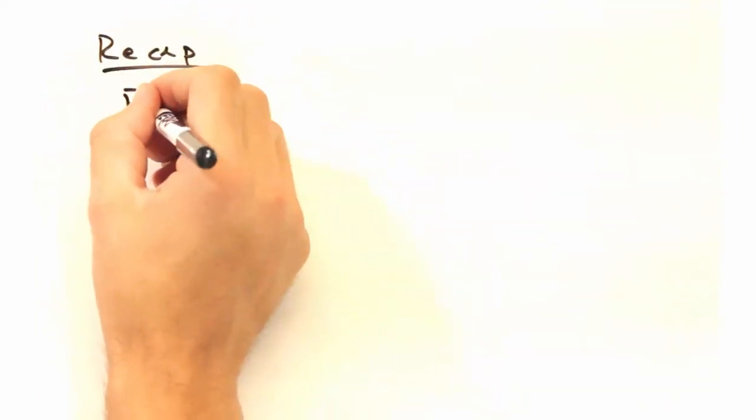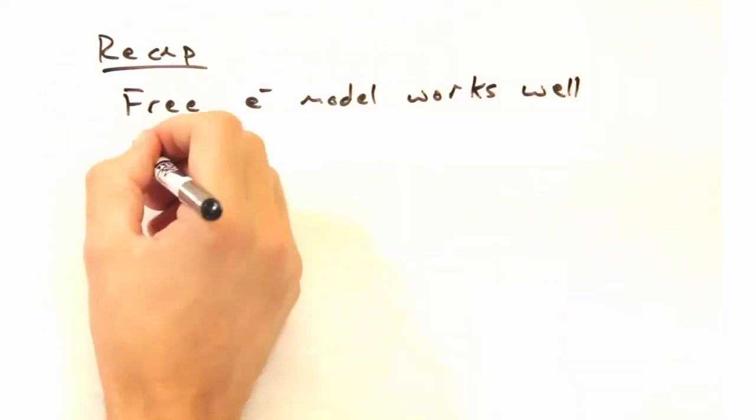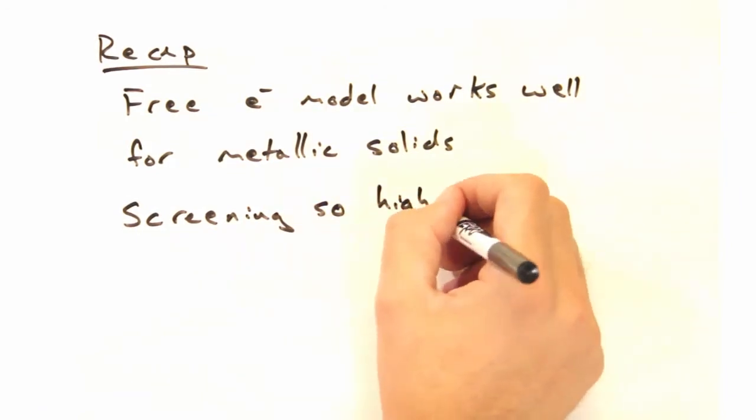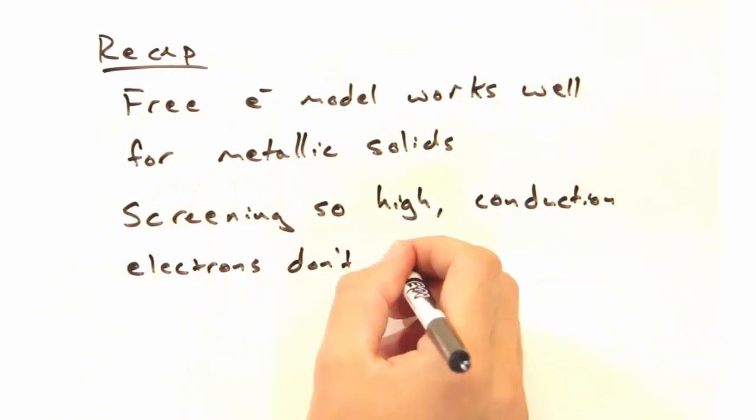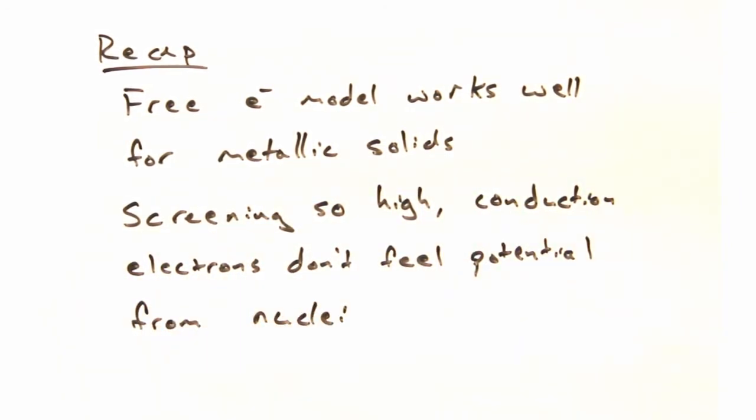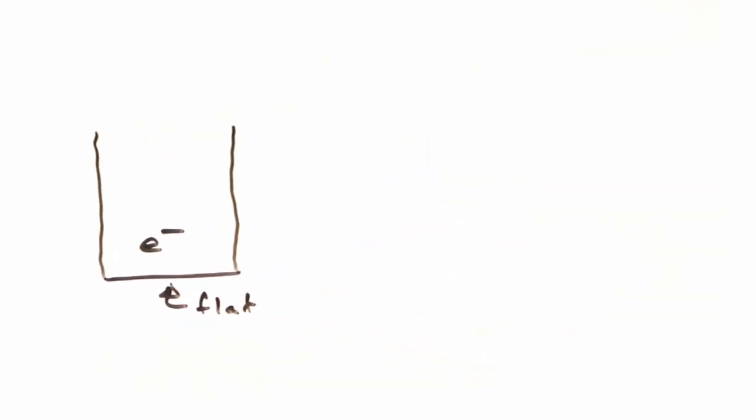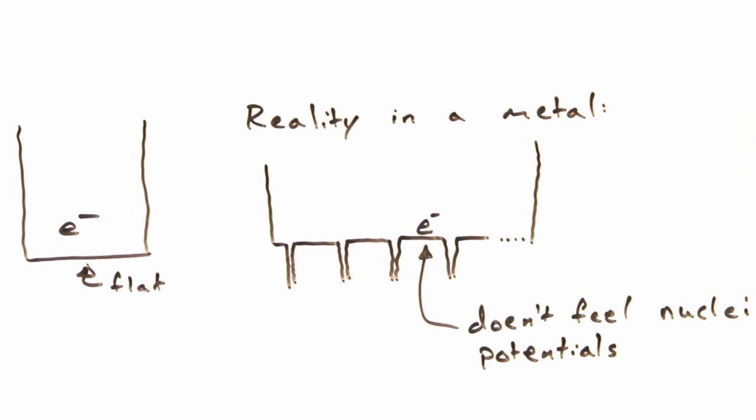Okay. So as a recap, the free electron model works well for solids because screening is so high that the conduction electrons don't feel the potential from the other atoms. So when we invoked a flat-bottomed box, that arose from shielding the nucleus from the free electrons. Who knew it would really be that simple?